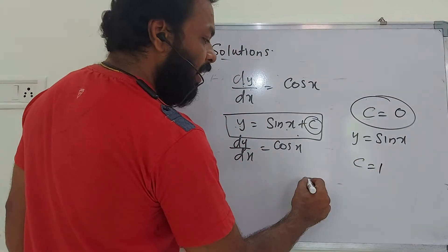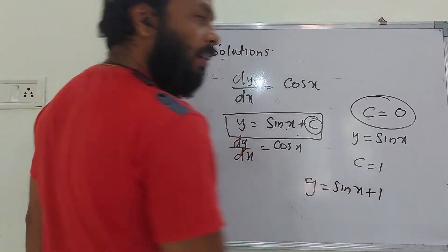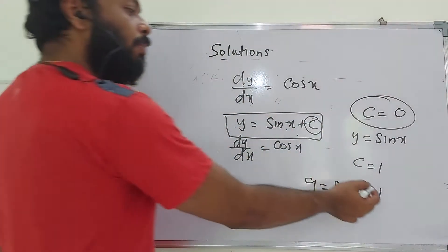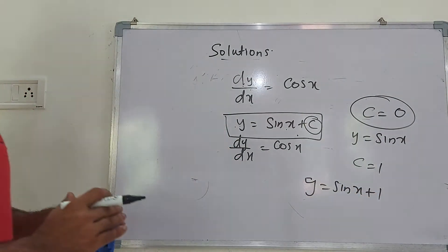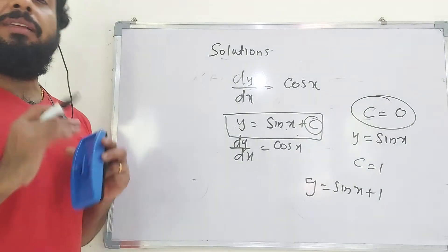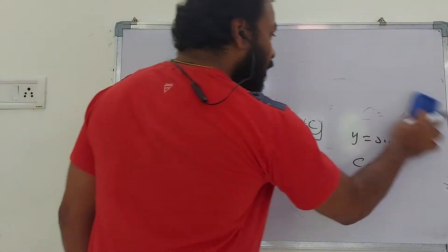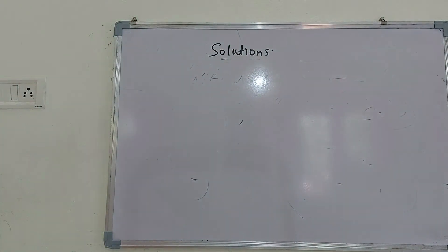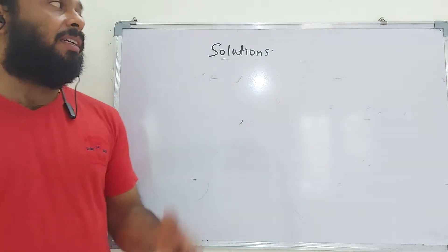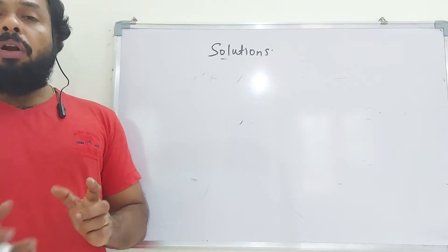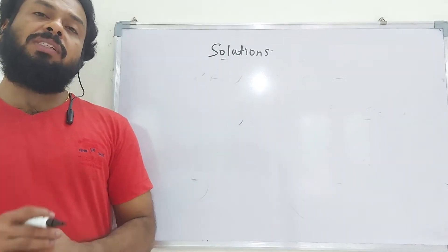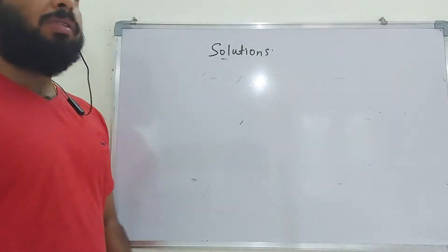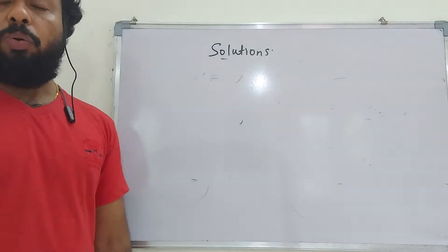If we put c = 1, we get y = sin x + 1. Then dy/dx = cos x, which also satisfies the given differential equation. So y = sin x + 1 is also a particular solution. Remember: the general solution contains arbitrary constants, and particular solutions are obtained by assigning specific values to those constants.